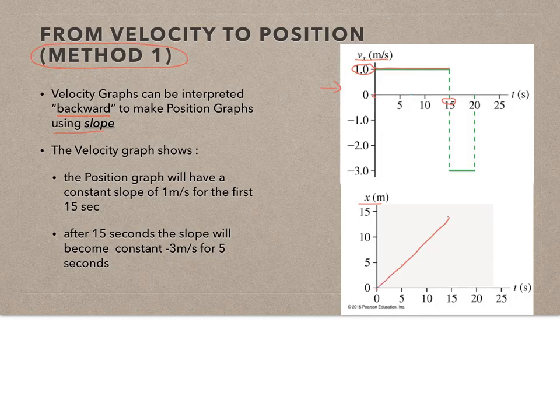Method 1 was to use the slope and recreate the slopes using the velocity values. Method 2 is called area under the curve. Essentially, we're going to look at velocity versus time graphs and analyze them by finding simple areas and keeping track of those.